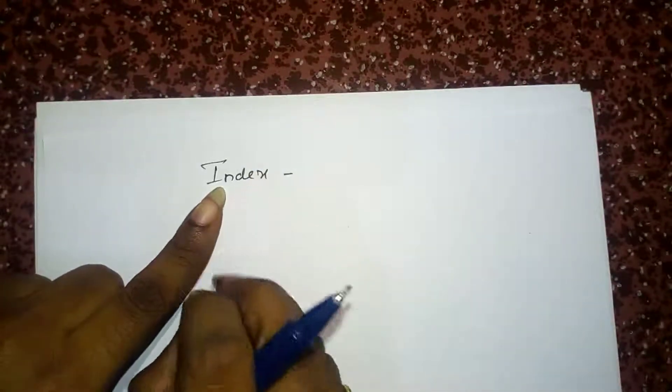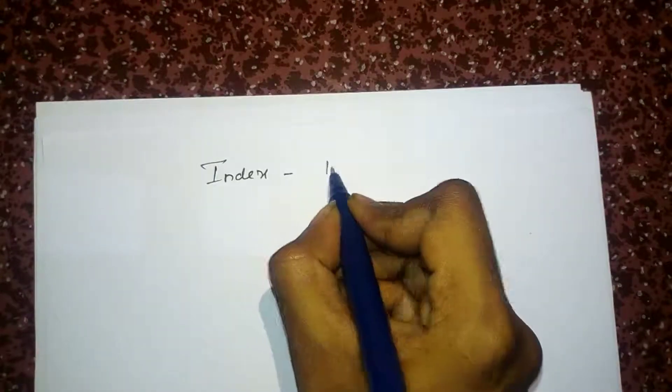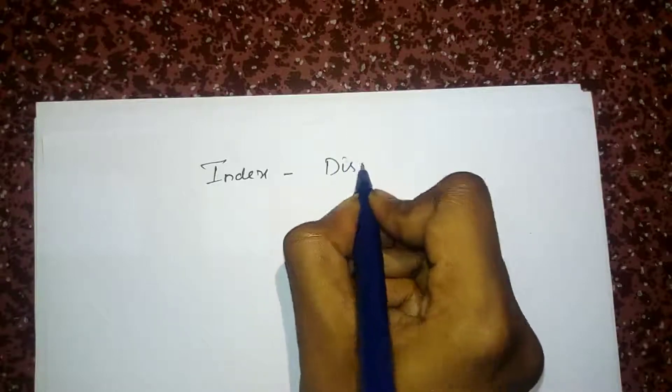In our previous lecture, we have seen how to find the index of non-disjoint permutation. In today's class, we will see how to find the index of disjoint permutation.